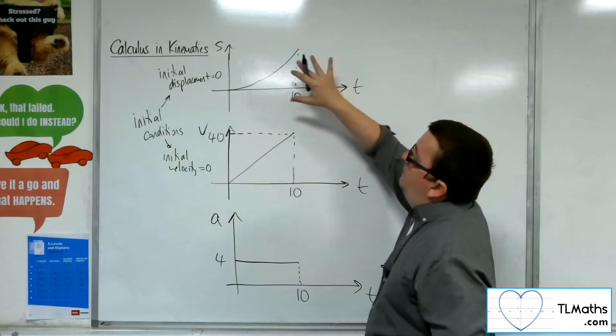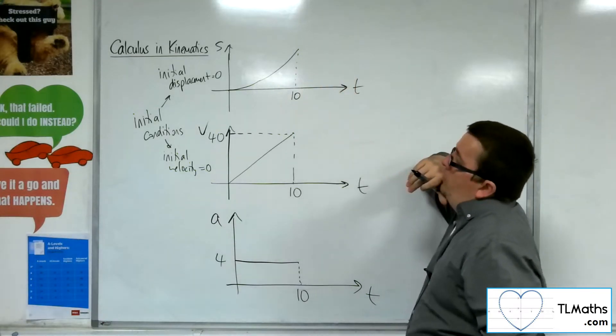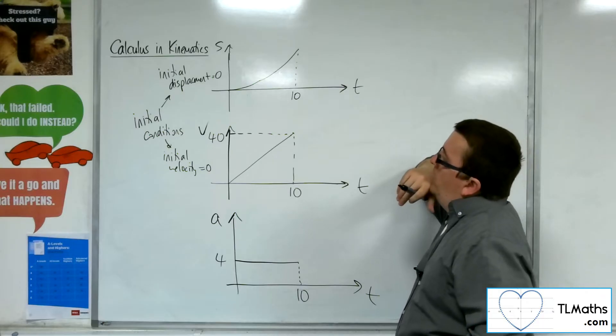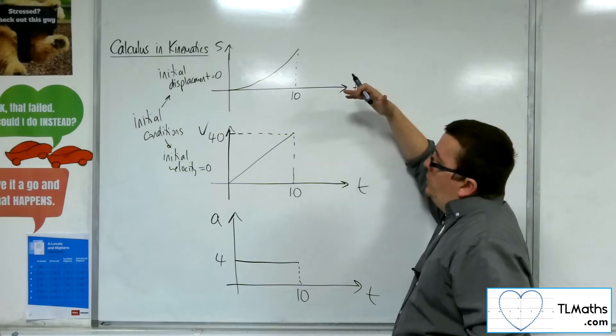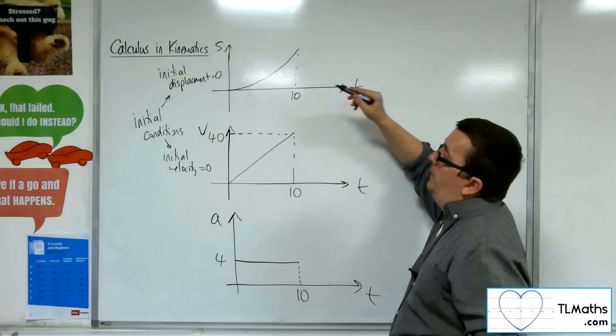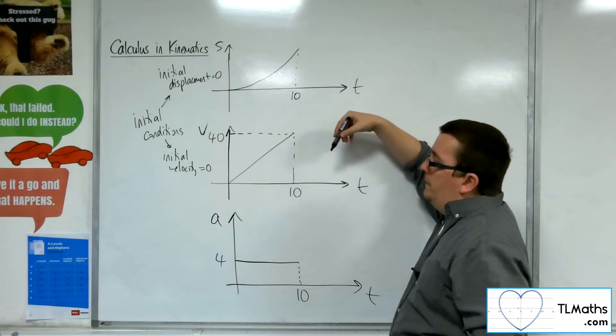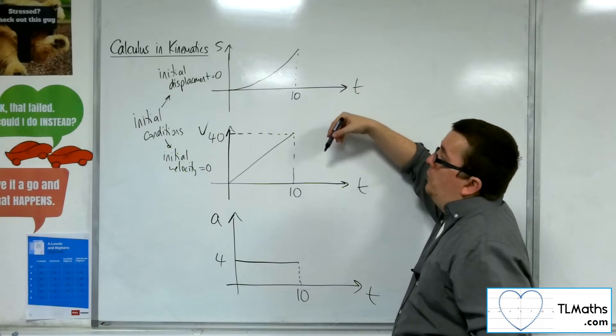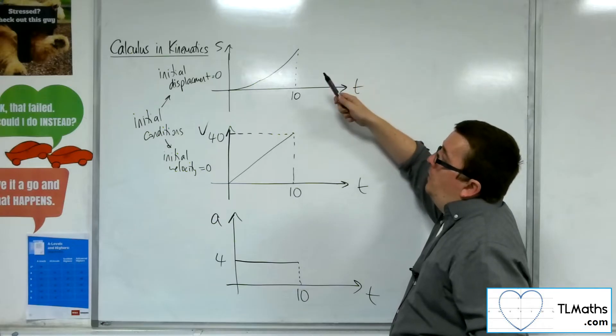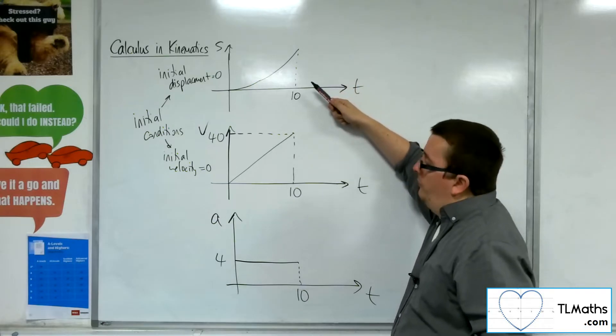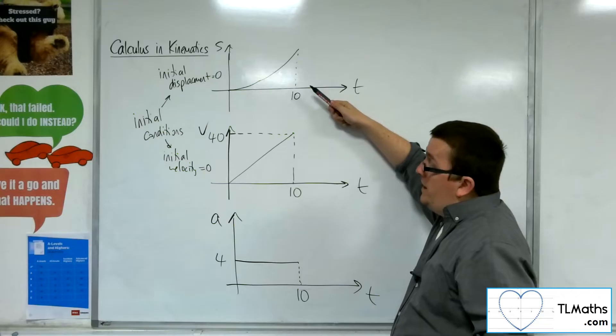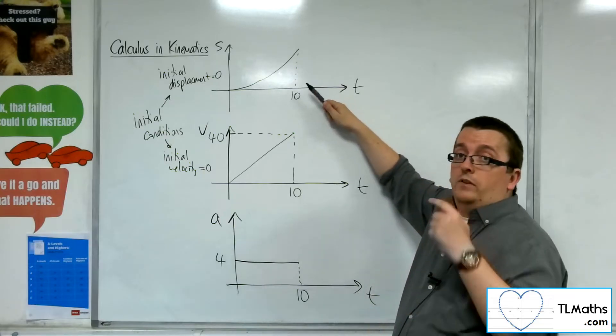Now, why are we getting this curved graph here? Well, if we work our way back down, remember we're looking at the gradient of the displacement is the velocity. So in order to get from a curved section of graph and then find the gradient, I need to use differentiation.